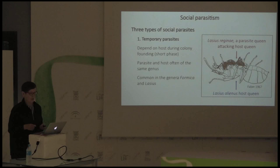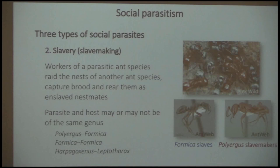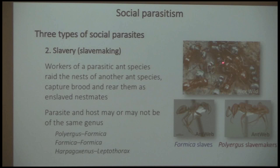The second type is slavery or slave-making. In slave-making, workers of the parasitic species raid the nest of another species, capture their brood, and rear them as nestmates. The parasite and host may or may not be of the same genus — as illustrated here with Polyergus and Formica: black slaves and red Polyergus slave-makers. Intra-generic examples include Formica raiding Formica, and in myrmicine ants, Harpagoxenus raiding Leptothorax.